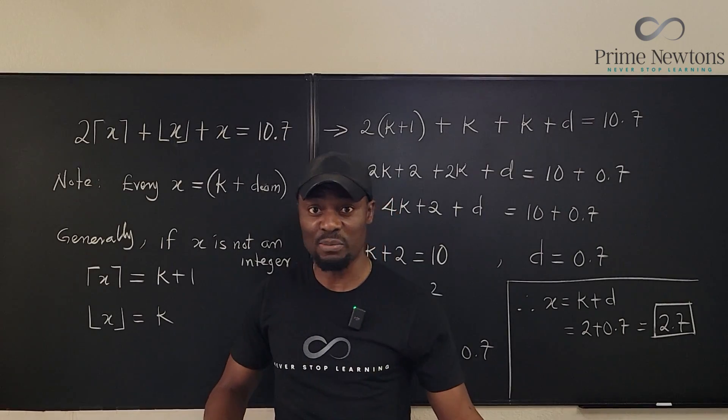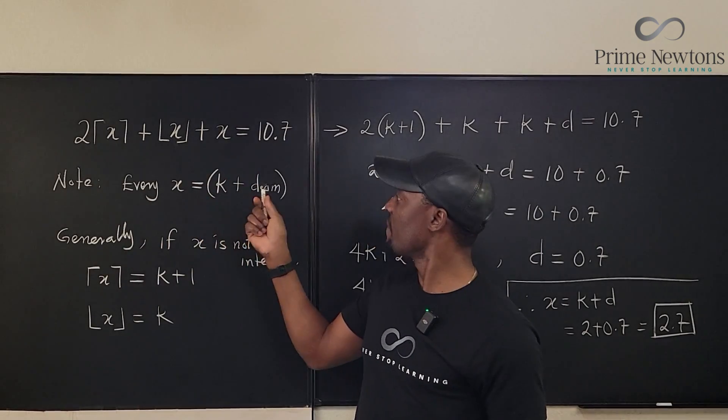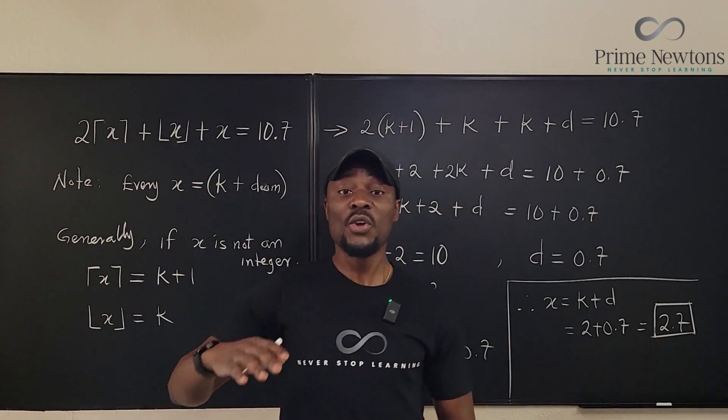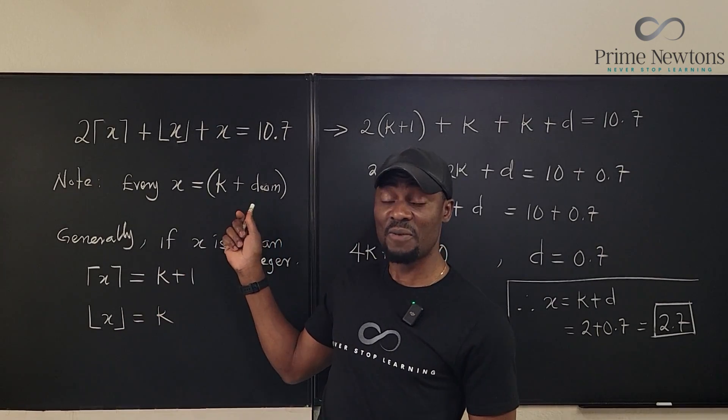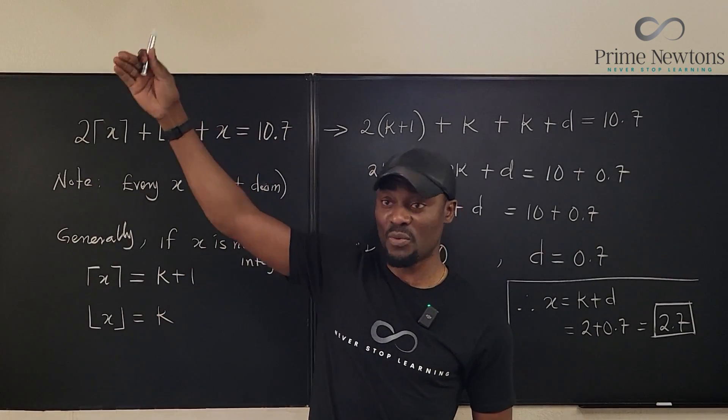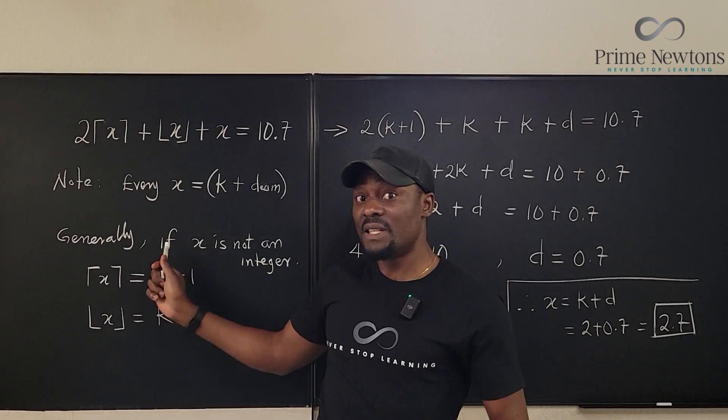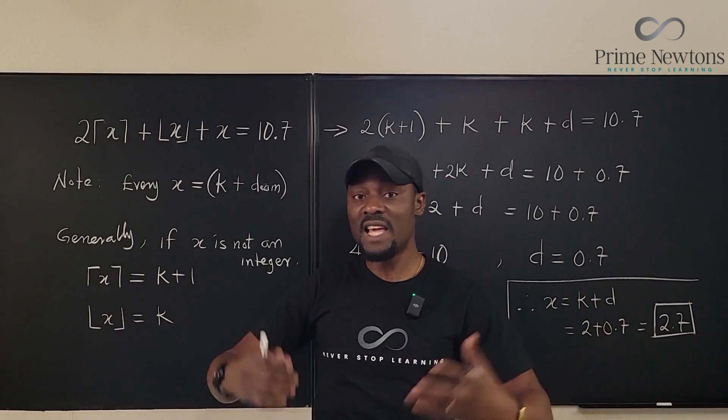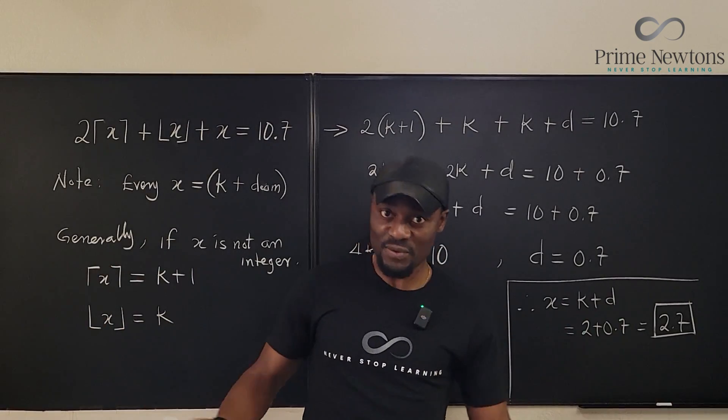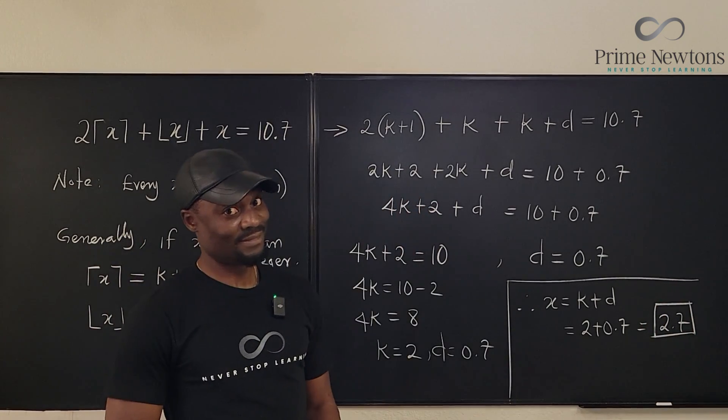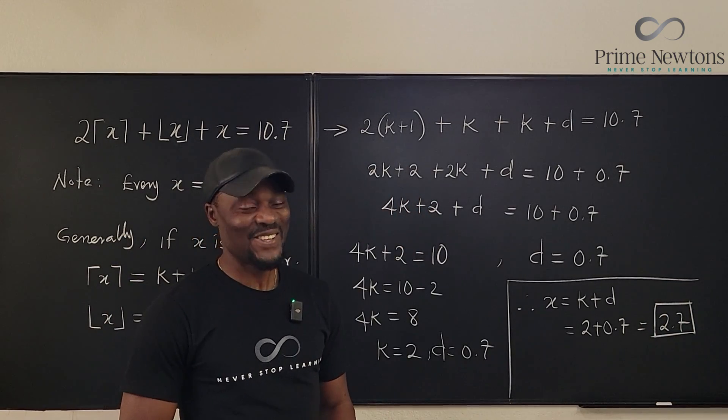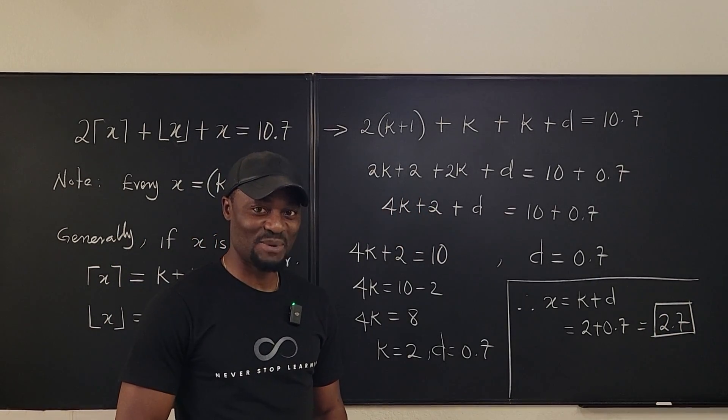Every X you write can be written as K plus D, where D is the decimal part and K is the integer part, which is always the floor. This is what determines whether you're going to add something or not. If this part exists and is not 0, then the ceiling will be K plus 1. But if it is 0, then the ceiling of any integer is the integer itself, and the floor is also itself. Never stop learning - those who stop learning stop living. Bye bye!